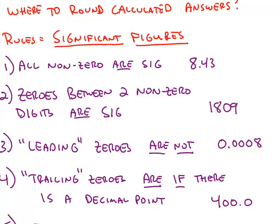Now in working problems, another question comes up. Where do you round your answers? Your calculator will often give you many more digits than you actually need. And the rules are determined by how many significant figures your answer should have. So the first thing we're going to look at is what does it mean for an answer, a number, to be significant?